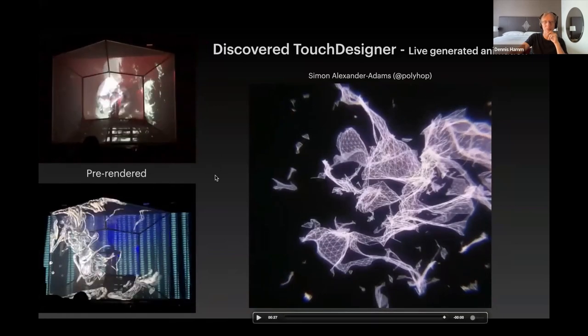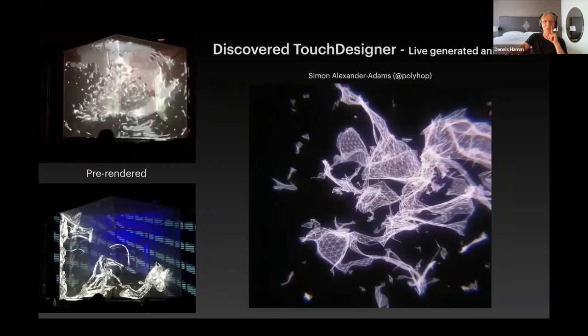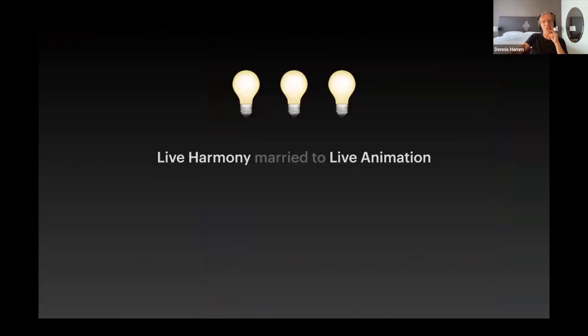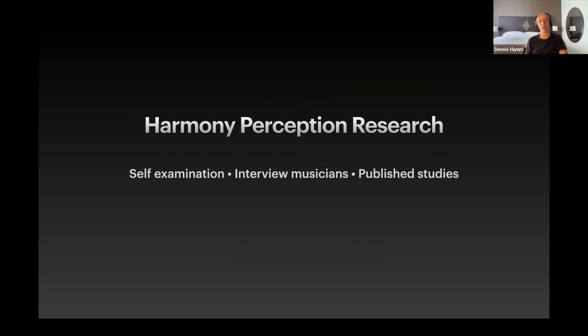Fast forward to 2021, when I discovered that Touch Designer allows you to create a similar aesthetic in live situations with live rendering and live generation of the animation. Here's Simon, who's also now a partner of mine for working on this project. So this led to an idea that it's now possible to potentially marry live harmony with live animation. And that's not pre-composed music and not pre-rendered animation. So it was a light bulb moment of, wow, now we can possibly represent some of the harmony that we're improvising live in some new ways. So that led me to the question, what does harmony look like?